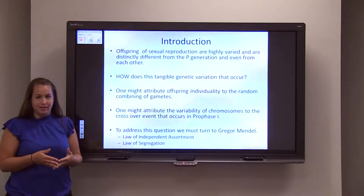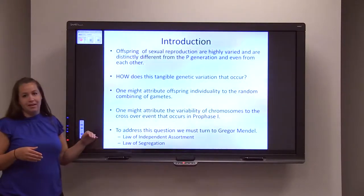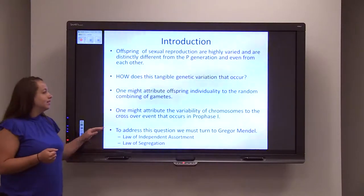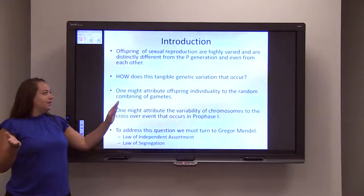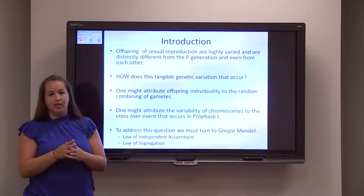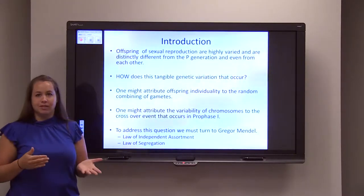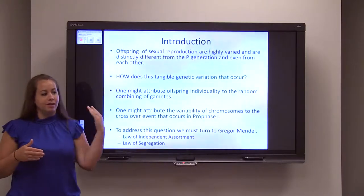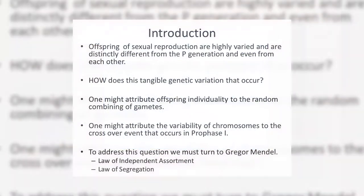It has to be more than just crossover. Gregor Mendel thought the same thing and started to investigate these principles. He first thought that maybe genetic variability has to do with the random combination of gametes — one male and one female unite in fertilization with no rhyme, reason, or logic behind the uniting other than one being male and the other female. Another idea was that maybe crossover was enough to lend sufficient genetic variability to create these variations from offspring to offspring, even within the same generation. Gregor Mendel went more in depth with these reasonings and created two different laws.